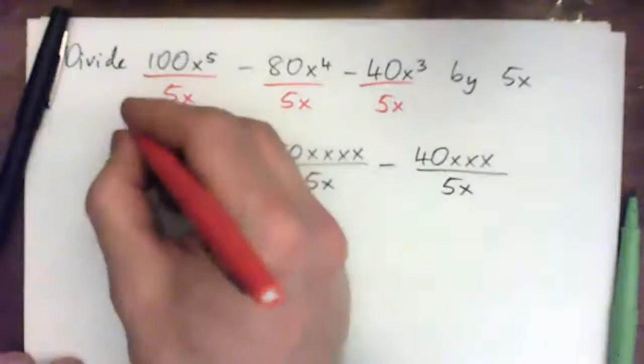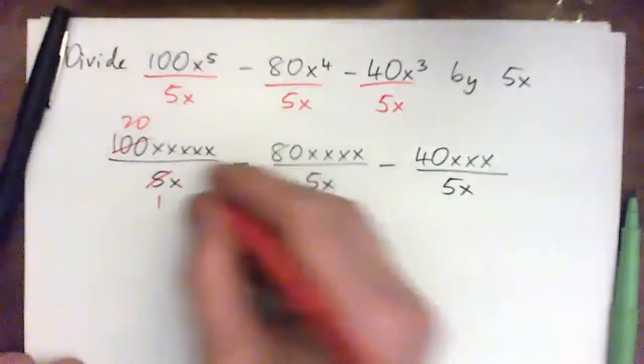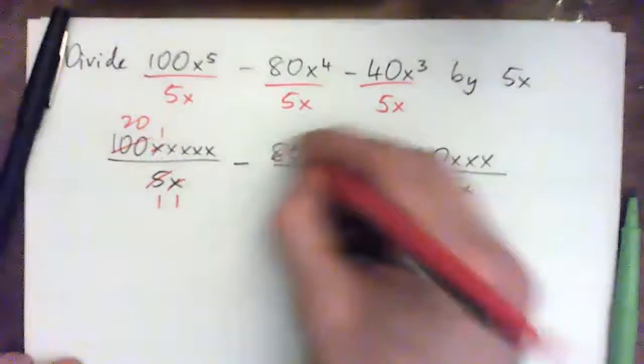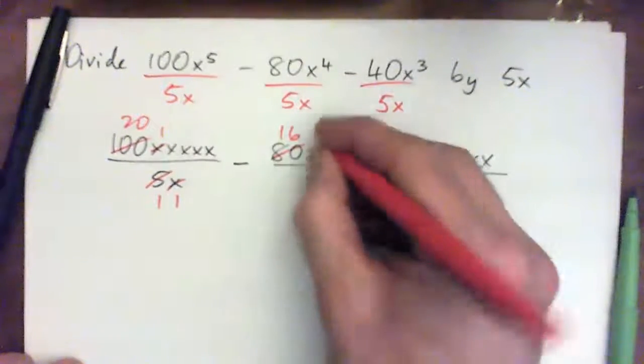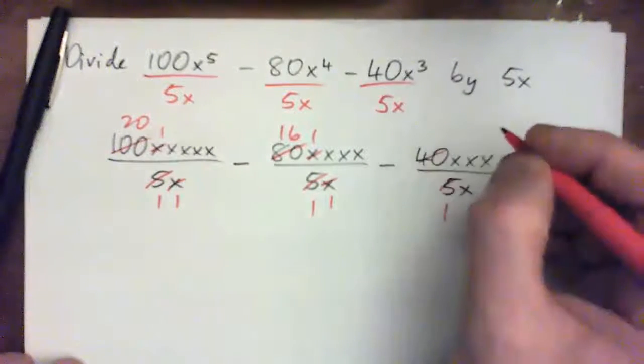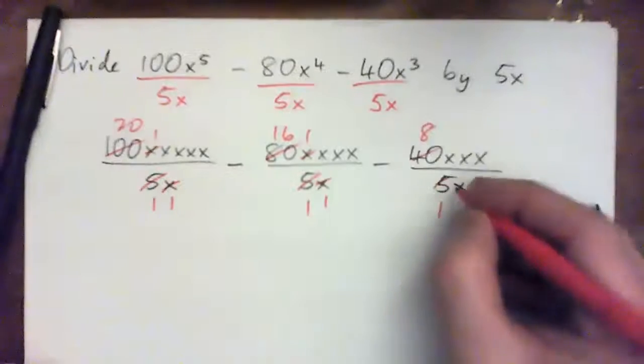So 5 to 5 goes once, 5 to 100, 20 times. x to the x goes once here and here. And then 5 to 5 goes once, 5 to 80, 16. x to the x cross-cancels. 5 to 5 once, 5 to 40, 8 times. And the x's cross-cancel.